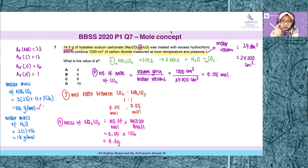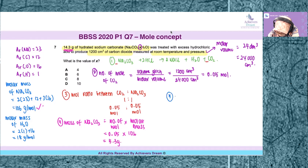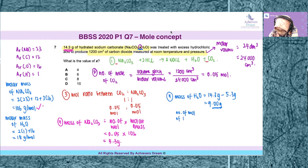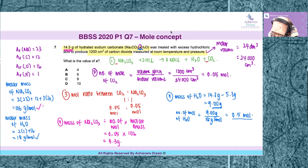In 14.3 grams of the hydrated salt, only 5.3 grams is contributed by the sodium carbonate. The remaining mass is all from water. So the mass of H₂O equals 14.3 grams minus 5.3 grams, which is 9 grams. To find the number of moles of H₂O, we take 9 grams divided by the molar mass of water, which is 18 g/mol, giving 0.5 moles.